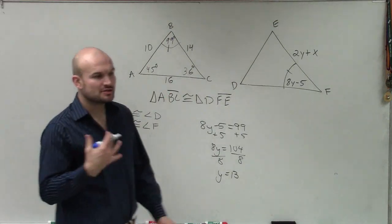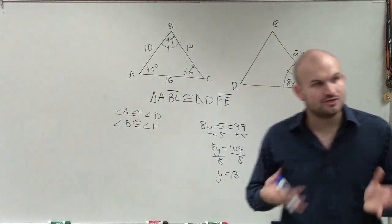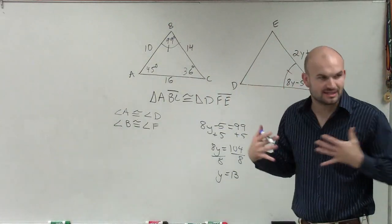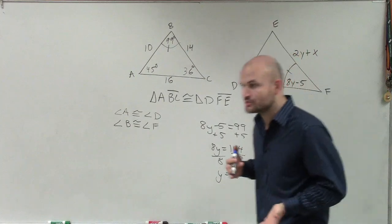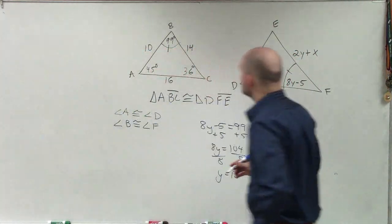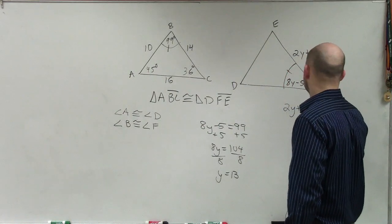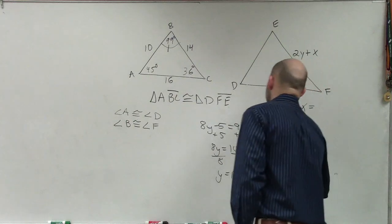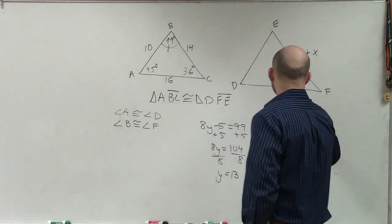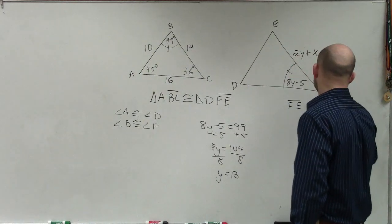So when you guys are trying to determine your congruent parts, look at how the triangle is labeled. Don't always just assume by looking at the picture. That's where they're going to try to trick you, and that's where you're going to make the mistake. So if FE is congruent to BC, then I can say that 2Y plus X is equal. Oh, sorry. Let's write it down like this.